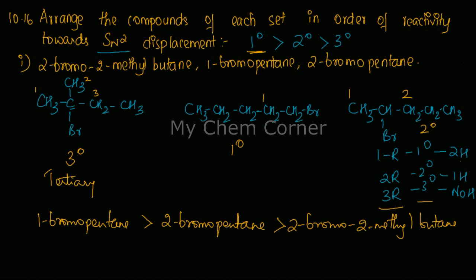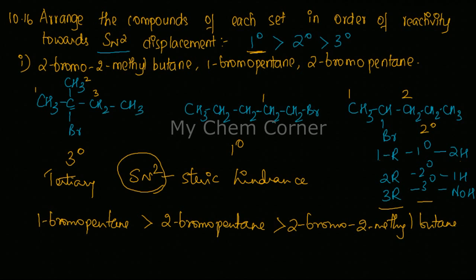An important additional point: for SN2 mechanism, the molecule should be free from steric hindrance. The greater the steric hindrance, the lower the possibility of SN2 occurring. In this example, the tertiary halide has groups on three sides creating steric hindrance around the Br, which is why tertiary alkyl halides have the least priority for SN2.